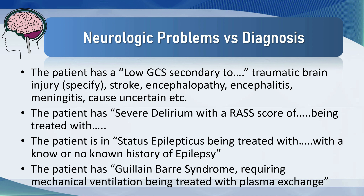The patient has Guillain-Barré syndrome requiring mechanical ventilation being treated with plasma exchange. So you can see that in each case I've listed the problem and the specific intervention that the patient is getting for that problem. And that's important in critical care, because if a patient has a problem and they need to be in the ICU, then we have to be addressing it in some way or other.